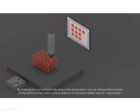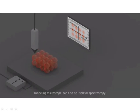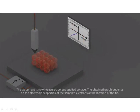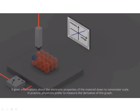A tunneling microscope can also be used for spectroscopy. The tip current is measured versus applied voltage, and the obtained graph depends on the electronic properties of the sample's electrons at the location of the tip. It gives information about the electronic properties of the material down to the nm scale. Physicists prefer to measure the derivative of this graph. One can also use the tunneling microscope to move atoms — bringing the tip very close to an atom allows it to be raised and moved somewhere else. The STM therefore allows reconstruction of surface images with atomic resolution, atomic spectroscopy, and manipulation of individual atoms.